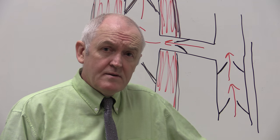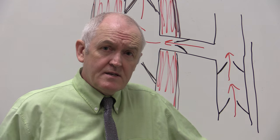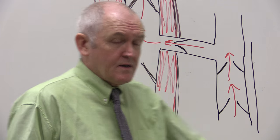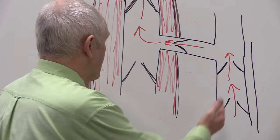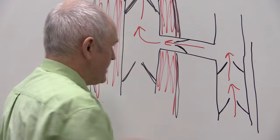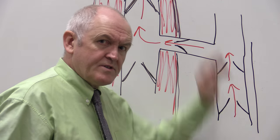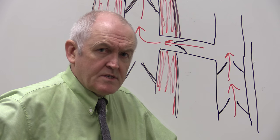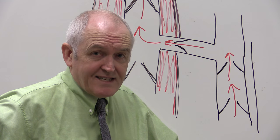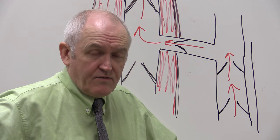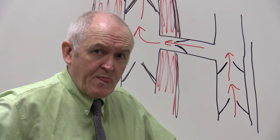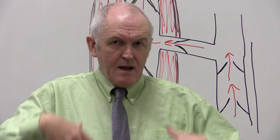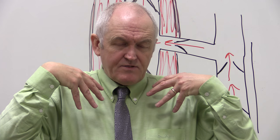In the previous clip we considered the components of venous return: contraction of skeletal muscles, movement of blood from the superficial to the deep venous systems, and the pulsatisation of adjacent arteries. But how else does blood get back from the periphery back to the centre of the body?